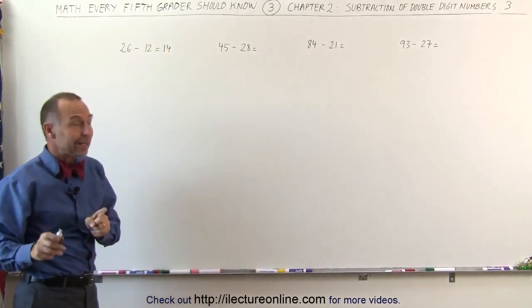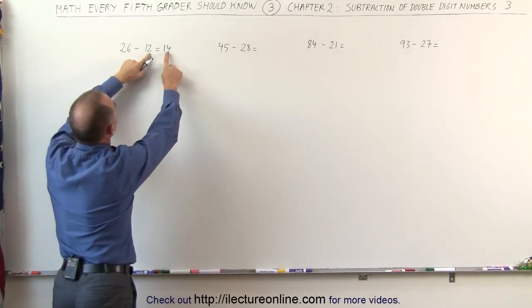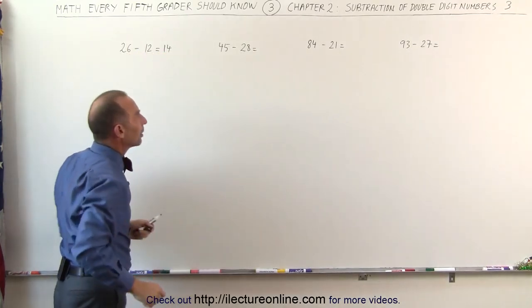Again, quickly check to see if you did it right by adding these two numbers together to see if you get the original number back. 1 plus 1 is 2, 2 plus 4 is 6. Yes, we did it correctly.